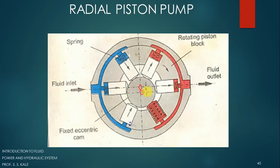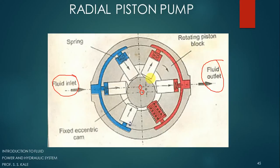This eccentricity is very necessary to move the piston forward and backward. These pistons are provided in the cylinder cavities. Three cylinder and piston arrangements are connected to the inlet port, and three are connected to the outlet port. Because of eccentricity, some pistons will be moving toward the center and some away from the center.